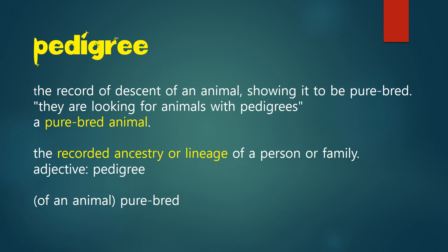Before going into the topic, we need to know what pedigree means. This definition is taken directly from Google: pedigree is the record of descent of an animal showing it to be purebred, or it is otherwise known as a recorded ancestry or lineage of a person or family. It's like a record of the descent of a family — you, your father, your grandfather, your great-great-grandfather — the listing of all your generations is called pedigree.